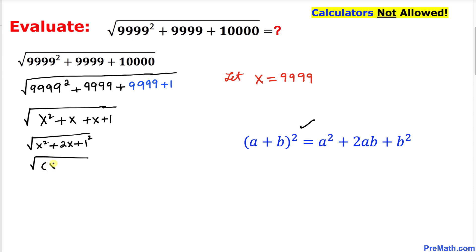I can write this one as x plus 1 whole squared, and now we can see that this square and square root undo each other. So therefore we end up with x plus 1, but we know our x value is 9999.